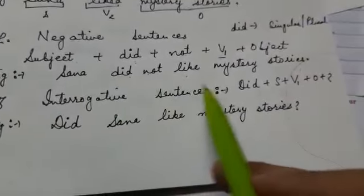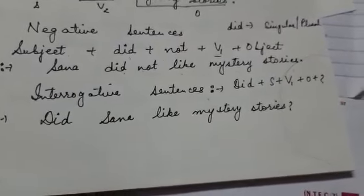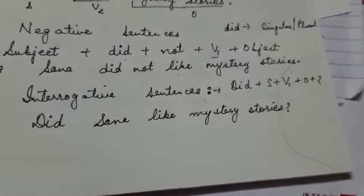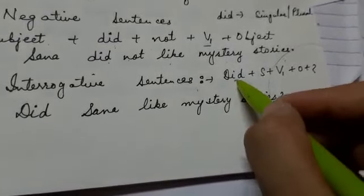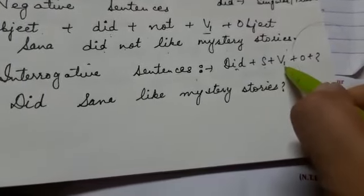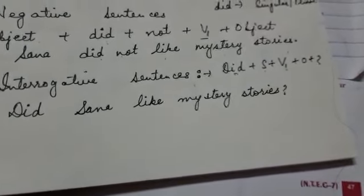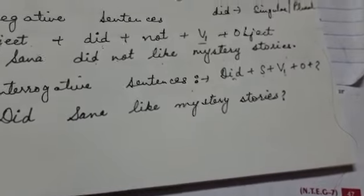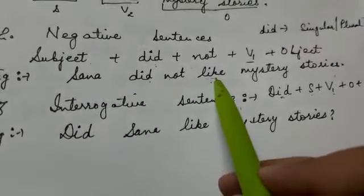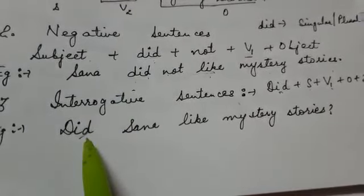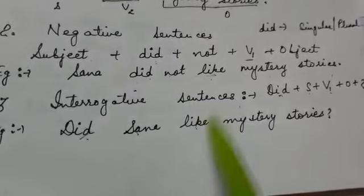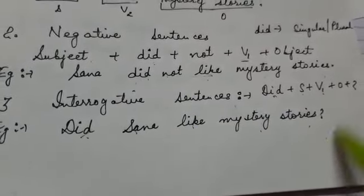Next is interrogative sentences. In interrogative, we will put the helping verb at the front — isko sab se aage likhenge hum. Did + subject + verb's first form + object, with question mark at the end. So this sentence can be written as: 'Did Sana like mystery stories?' — 'Did' is the helping verb here.